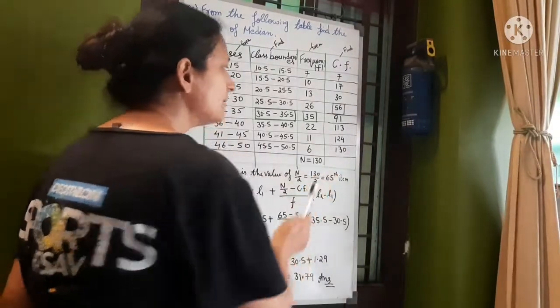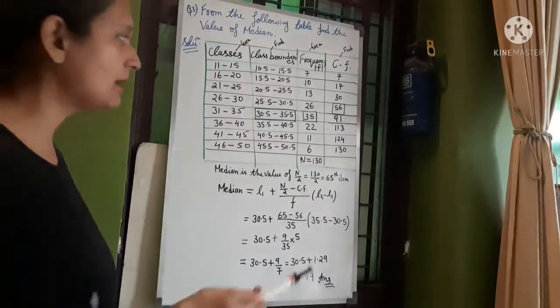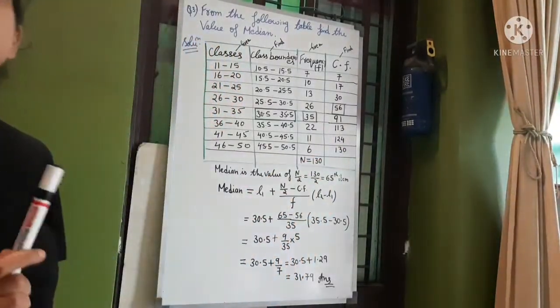Last number is sum. So frequency sum 180, cumulative frequency last number 130. 80.